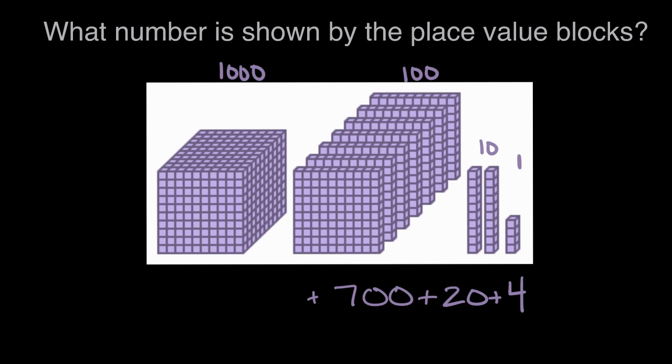Plus only one of the thousands, which will be 1,000. And now to combine this, to write this all together, this will be 1,724 is the number shown with these place value blocks. Thanks.